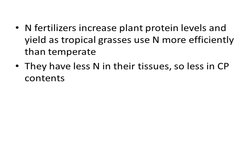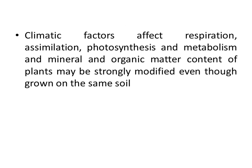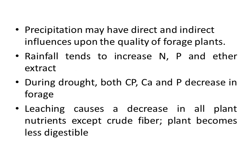First cutting is of higher nutritive value than second cutting material. Nitrogen fertilizer increases plant protein levels and yield; however, as tropical grasses use nitrogen more efficiently than temperate grasses, they have less nitrogen in their tissues and thus less crude protein content. Climate factors affect respiration, assimilation, photosynthesis, metabolism, and mineral and organic matter content of plants. Rainfall tends to increase nitrogen, phosphorus, and other extractives, while during drought both crude protein, calcium, and phosphorus decrease in forage. Leaching causes a decrease in all plant nutrients except crude fiber, making plants less digestible.